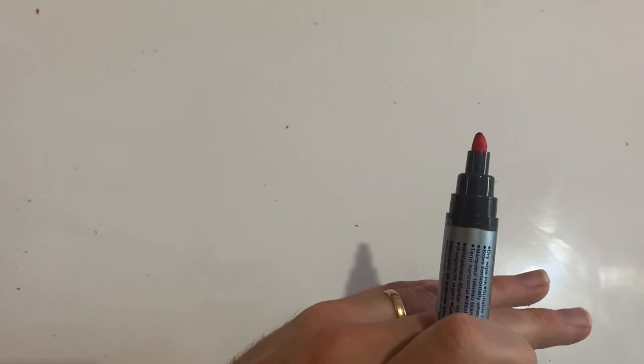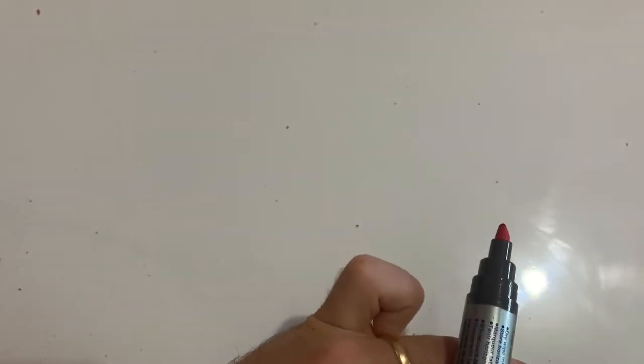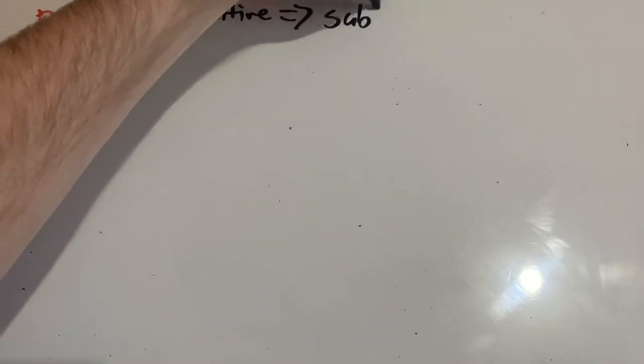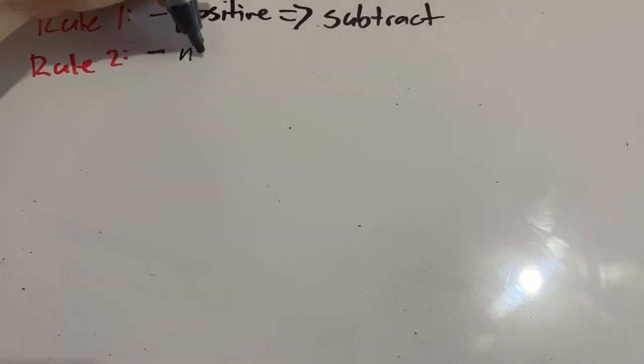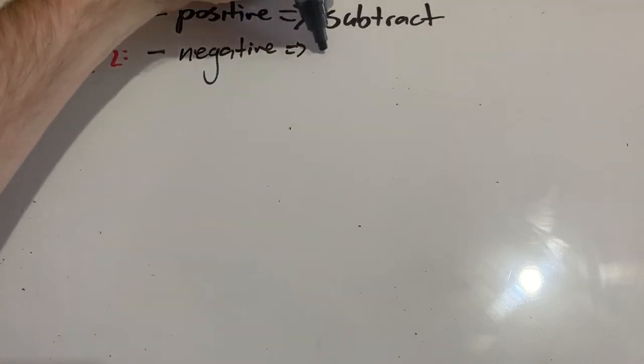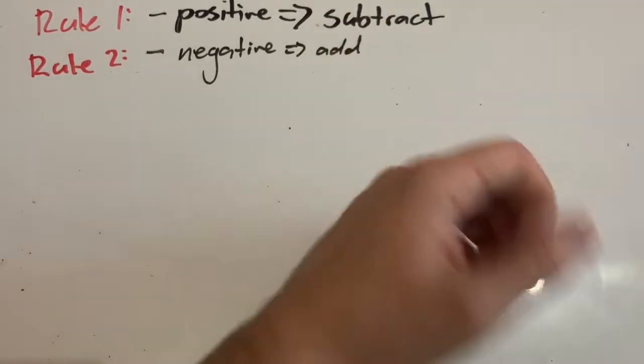Similarly to adding positive and negative numbers, we have got some rules which we need to follow. Our first rule is that if we subtract a positive number, we actually are subtracting it. That's just regular subtraction. That's what we've been doing this whole time. When we are subtracting a negative number in rule two, we're actually adding it. That's a bit strange. Why is that?